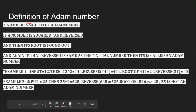Hope you are clear about the logic of Adam number. Take a number, square it, reverse the number, and then find the square root. If the input number equals the answer you got, then it is called an Adam number; otherwise, it is not an Adam number.